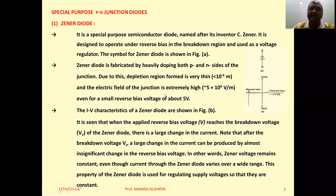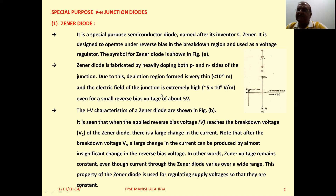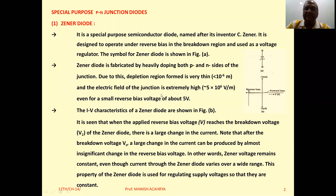Special purpose PN junction diodes. First one is the Zener Diode, named after its inventor. The name of the scientist was C. Zener, so this diode is named as Zener Diode.